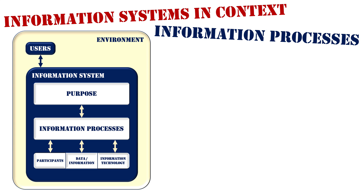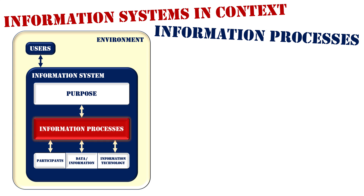If we look at the diagram here on the left, you can see the information processes at the center of the information system, which highlights their importance because it is the one component that connects to all the other internal components: the purpose, the participants, the data and information, and information technology. It's central to all these things happening.